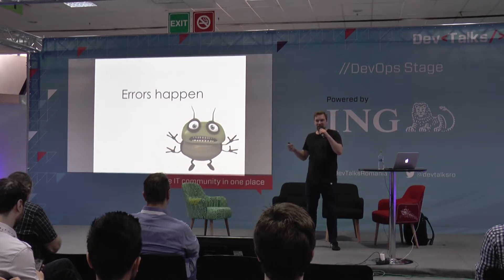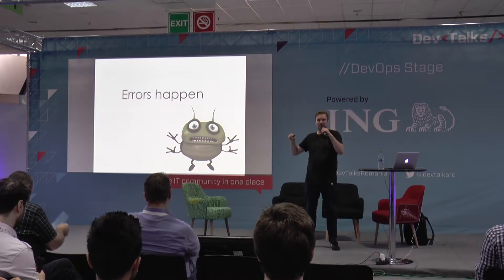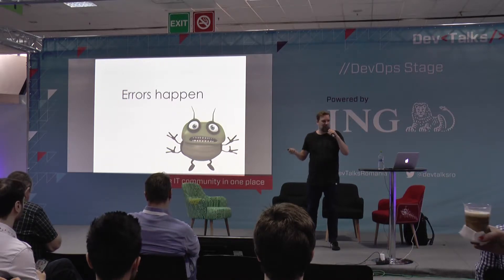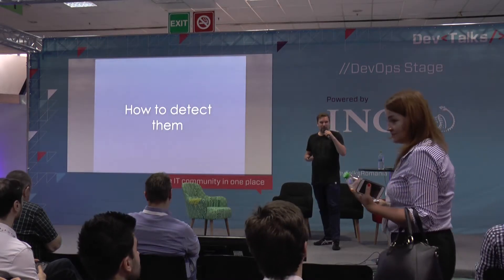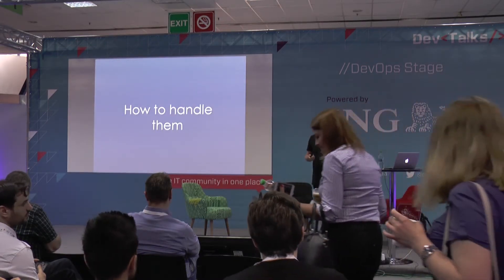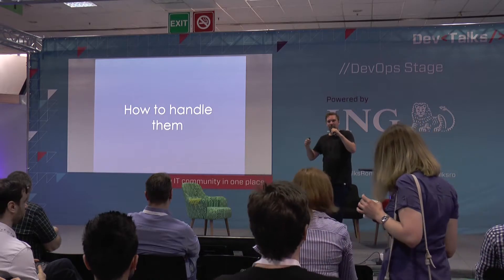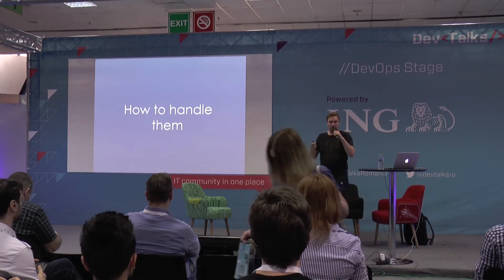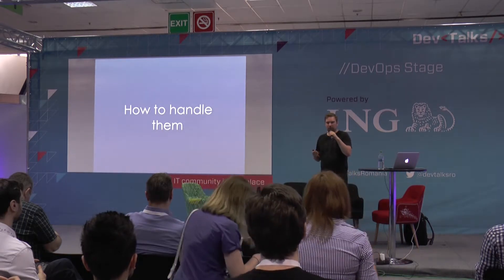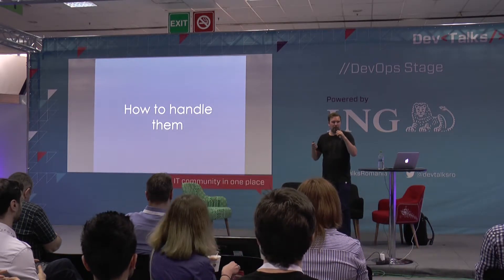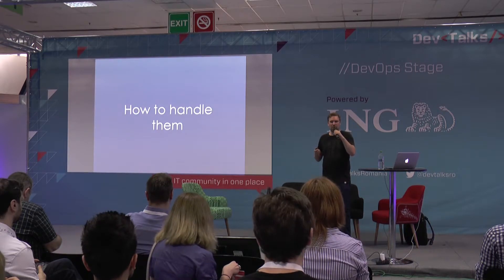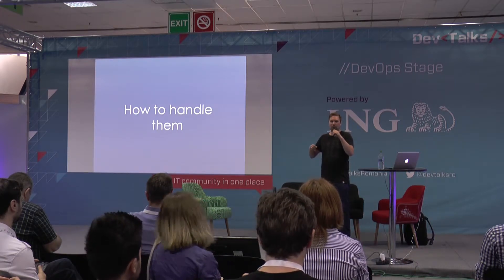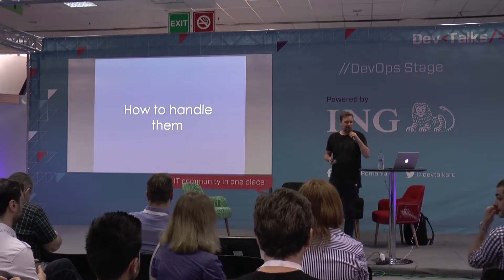So if we know and accept that errors will happen, then we can think about how we actually limit the impact of these errors. We should be really good at detecting errors and handling them when they happen. And of course we should also be very good at fixing bugs and fast at deploying them. The main point of this talk is how to detect errors as quickly as possible and how to handle them so that users are not annoyed seeing error pages everywhere.